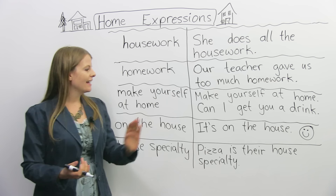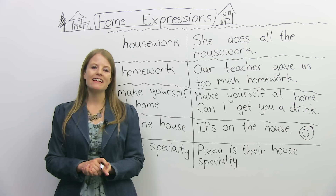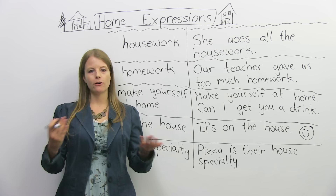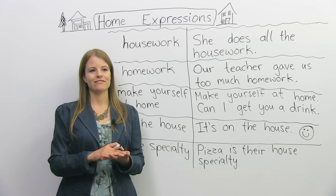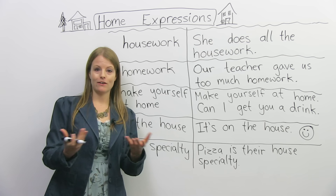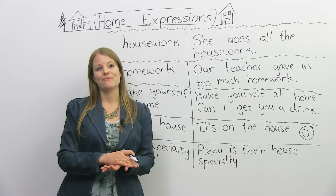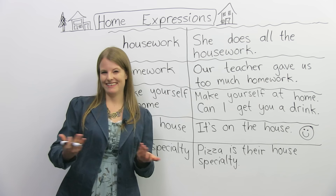The next expression is 'on the house.' This is a very important restaurant expression. It means something at a restaurant is free — you don't have to pay for it. For example, 'Maybe drinks are on the house' means drinks are free at this restaurant. A lot of Japanese restaurants have soup on the house. Or sometimes the bartender or server really likes you and gives you free food — that's also on the house.